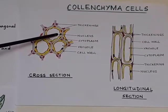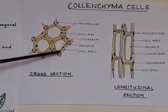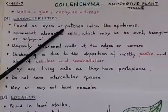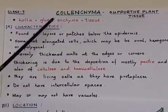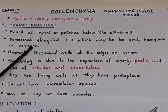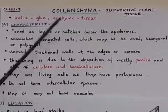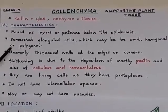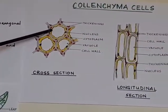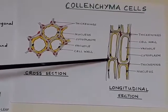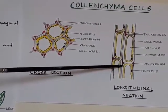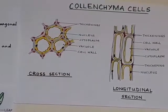They also have a nucleus, as you can see in the diagram. The main characteristics of colenchyma tissue: they are found as layers or patches below the epidermis. They are somewhat elongated cells which may be oval, hexagonal, or polygonal. They have unevenly thickened walls at the edges or corners — unevenly thickened means the thickening is not the same; in some places it may be less and in others more.